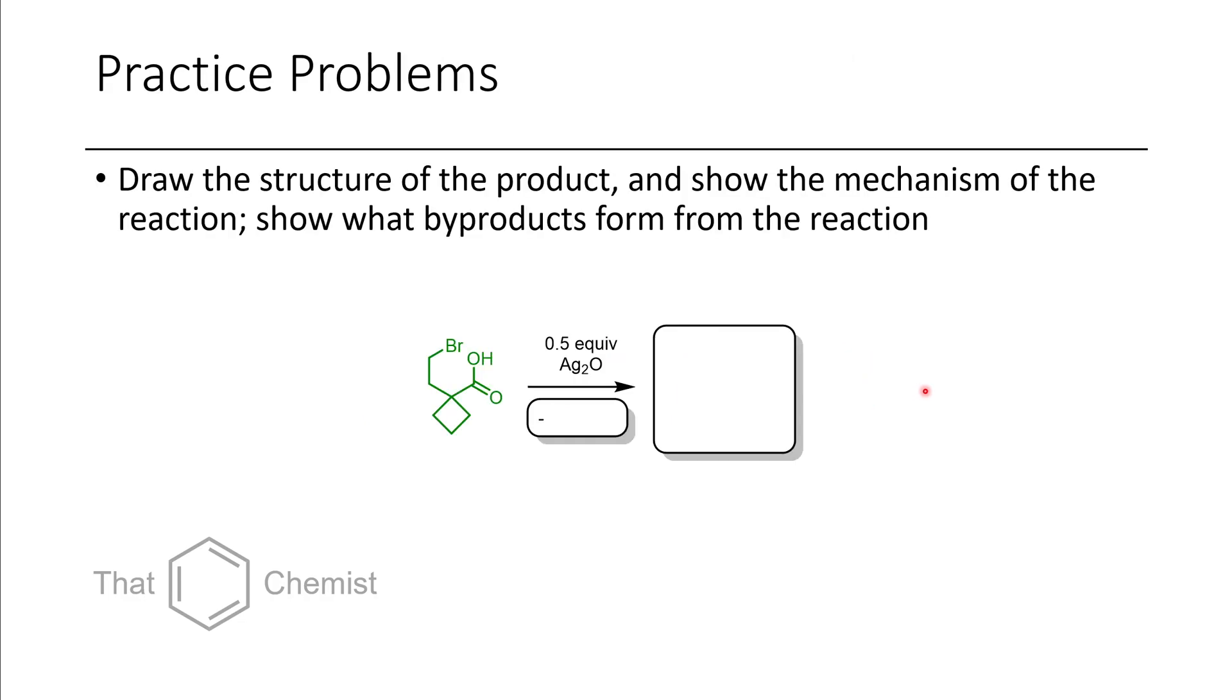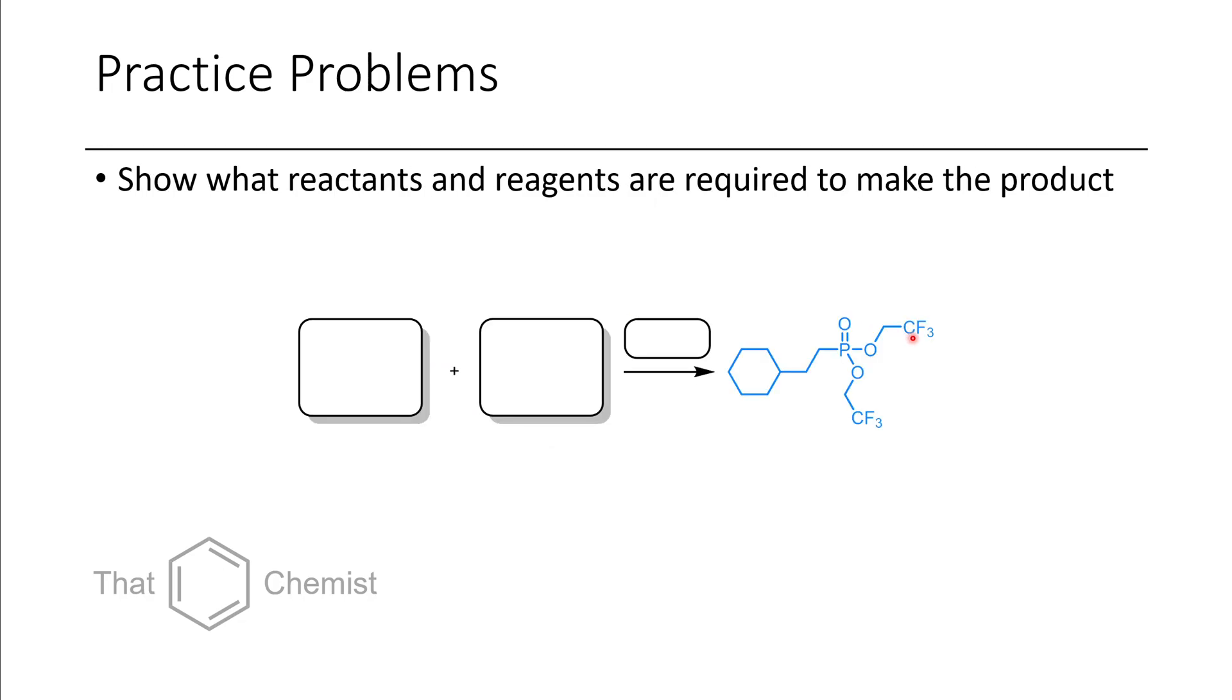So for next lecture, I'd like to assign two problems. First, determine the product and what byproducts form when you treat this carboxylic acid with silver oxide. The next problem I'd like to assign is suggest two reagents and what conditions would be necessary for the synthesis of this phosphonate here. And with that, I hope you've enjoyed this lecture. If you have any questions or comments, please do leave them below. And if you have any comments about how you think this series could be done better, please leave them in the comments and I would be very happy to hear them. Have a great day.